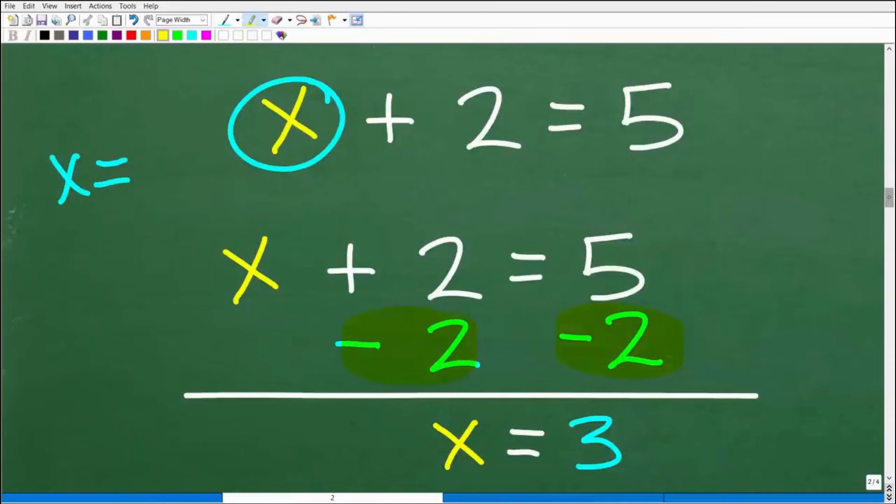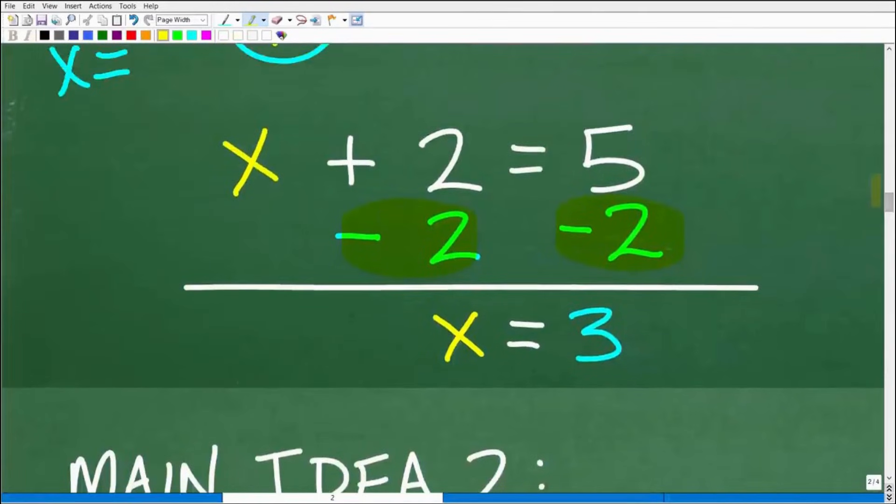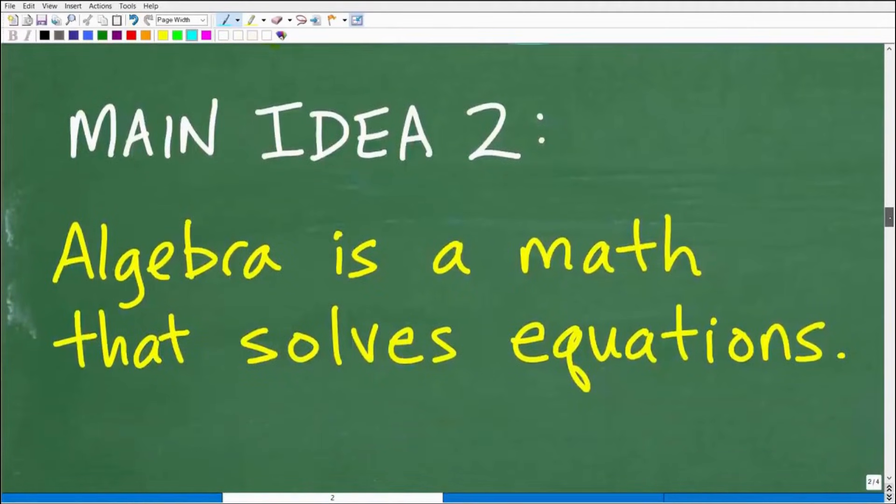So in algebra, you learn formal steps to solve equations. And then here, we just add down in the column manner. X plus nothing is X, or X plus 0 is X. And then positive 2 minus 2 or 2 minus 2 is 0. We don't need to write that. And then 5 minus 2 is 3. So this is the procedure we use to solve equations. There's all sorts of equations.